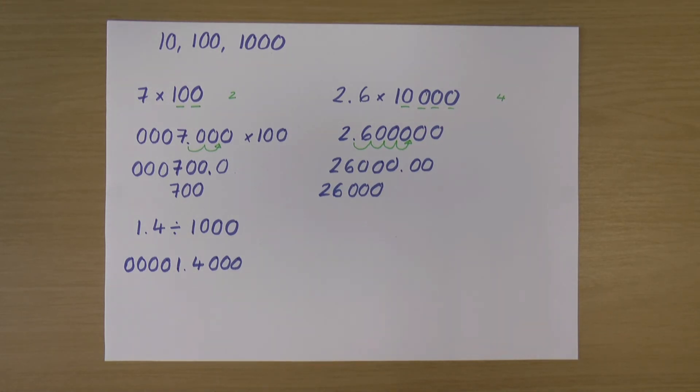And I'll do exactly the same thing as I was doing for multiplying, except this time I'm going to move my decimal point to the left. So the first thing I'm going to do is count my 0s in 1,000. Well, I've got 3.